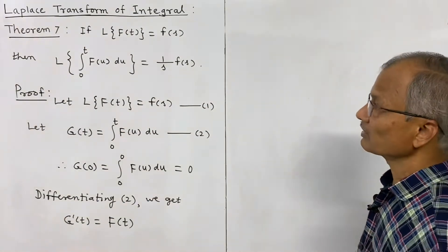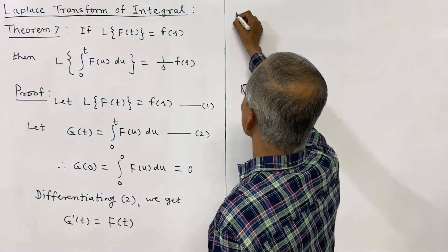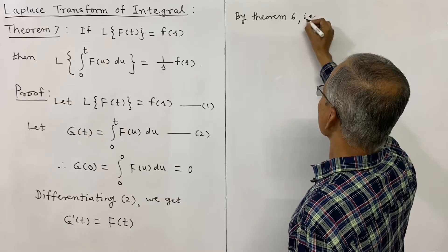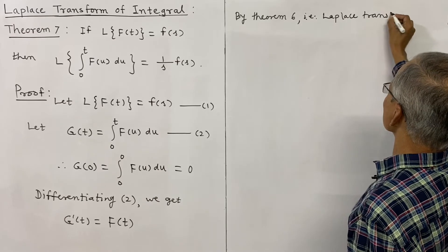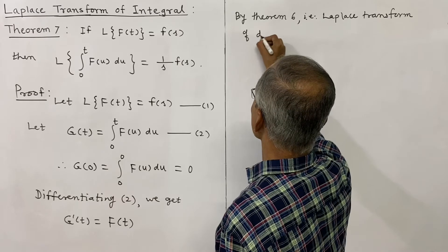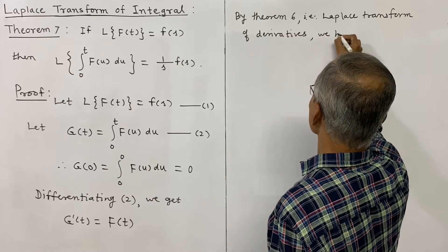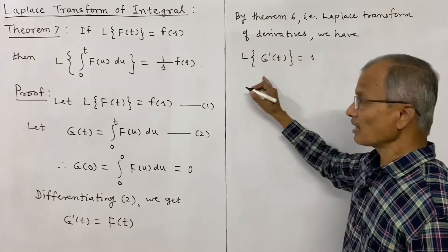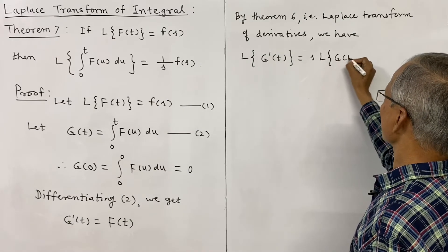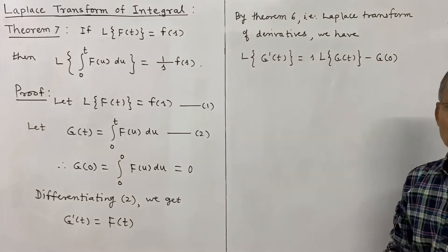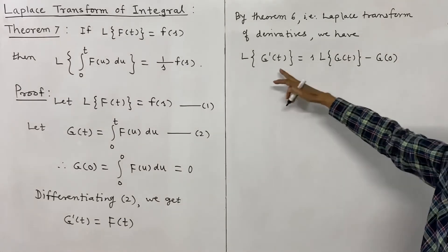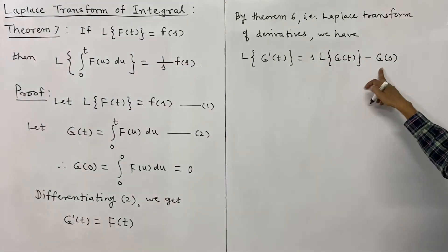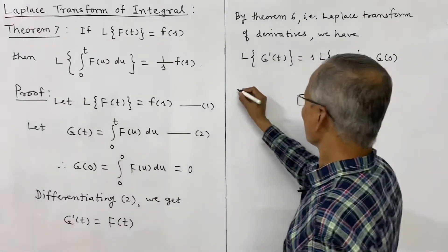We shall make use of theorem 6, which is the Laplace transform of a derivative, studied in our earlier lecture. By theorem 6, the Laplace transform of g'(t) is expressed as s·L{g(t)} minus g(0). In place of capital F we have written capital G, so L{g'(t)} = s·L{g(t)} - g(0).